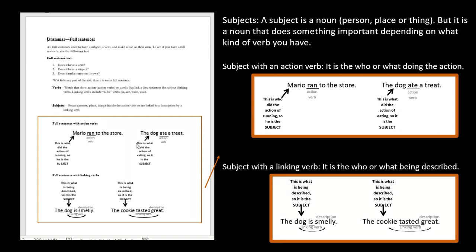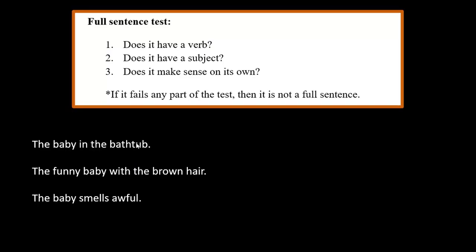Both of those have a subject and verb, so they pass that part of the test. With a linking verb, the subject is the who or what being described. In 'the dog is smelly,' 'smelly' is a description pointing back to 'the dog,' so 'dog' is the subject. In 'the cookie tasted great,' we ask who or what was great — it was the cookie. So we have a subject and a verb. Subjects are often fairly easy to pick out, but it's important to know how they work for tricky sentences.